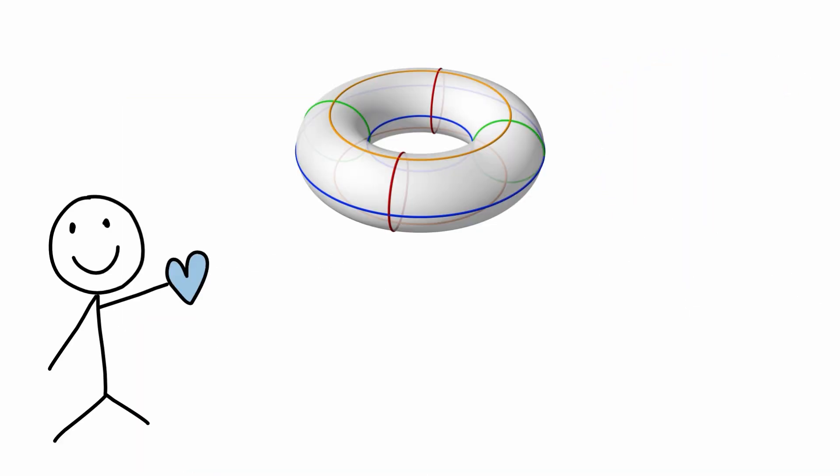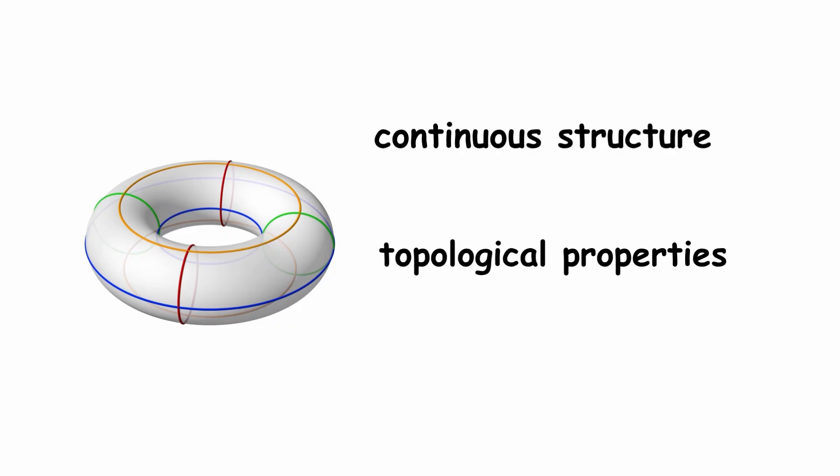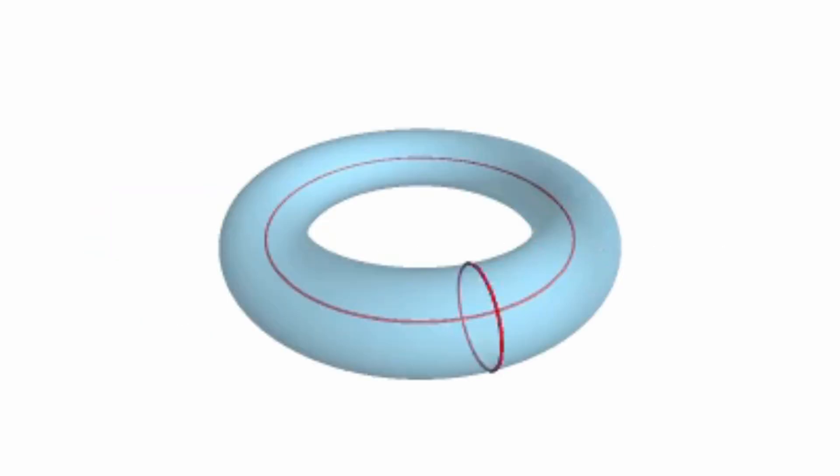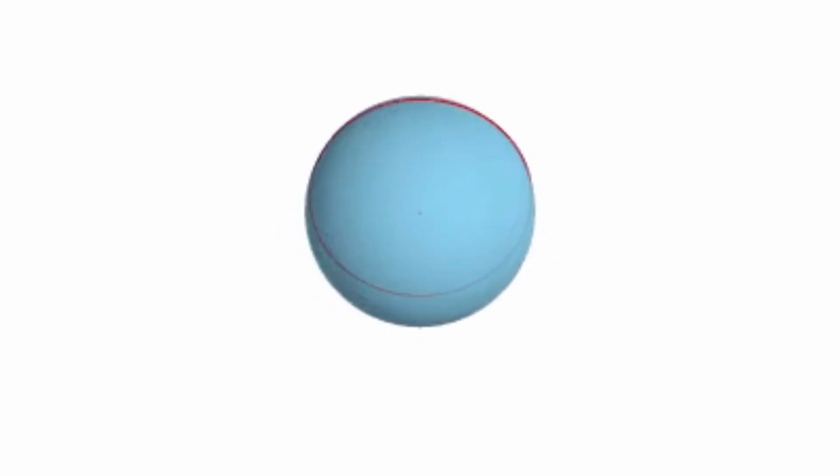The torus is one of the most fascinating shapes in 3D modeling, both for its continuous structure and its topological properties. It is generated by rotating a circle around an axis that does not intersect it.